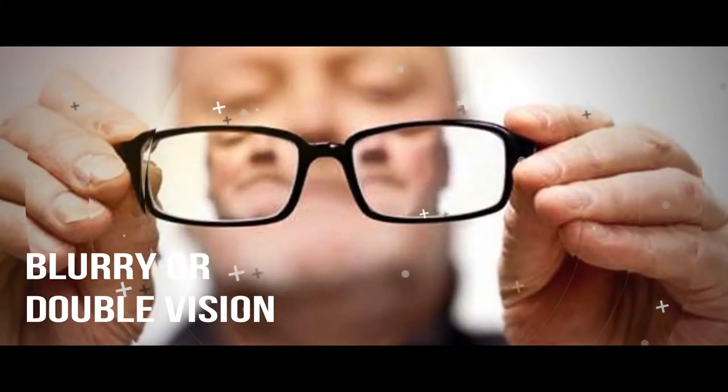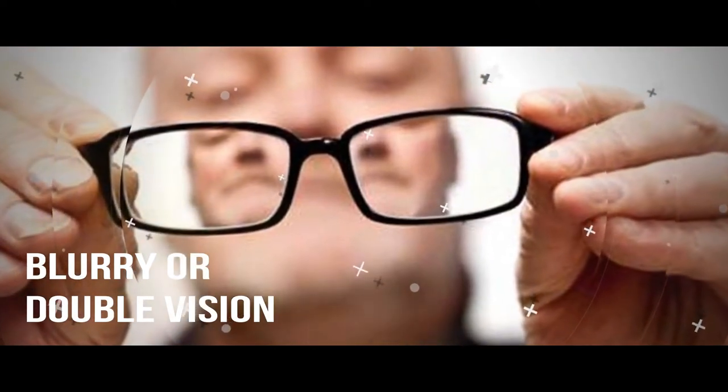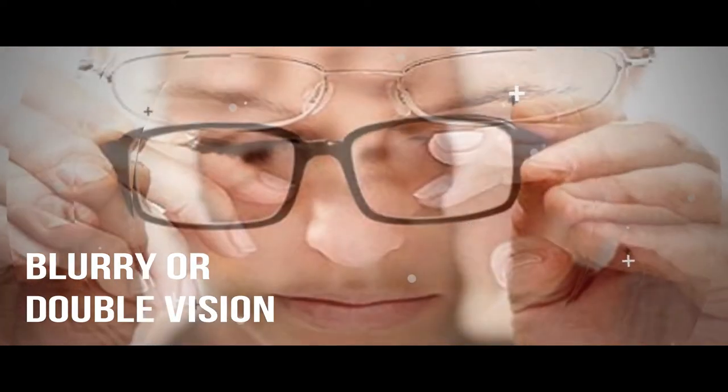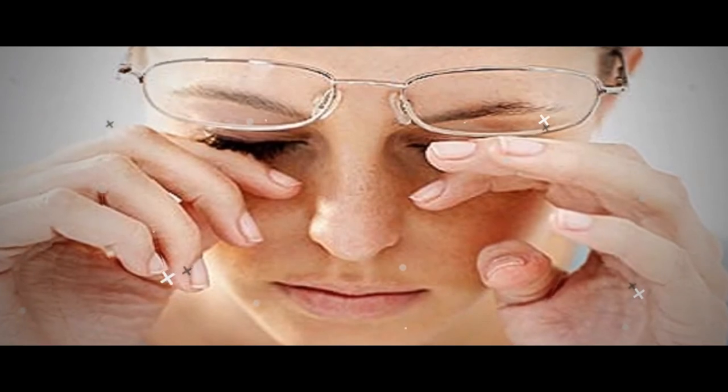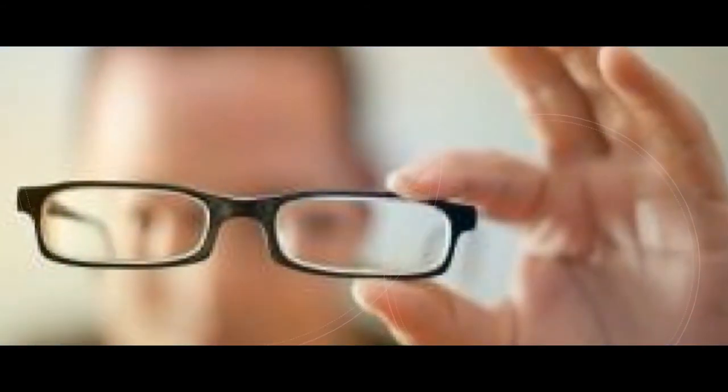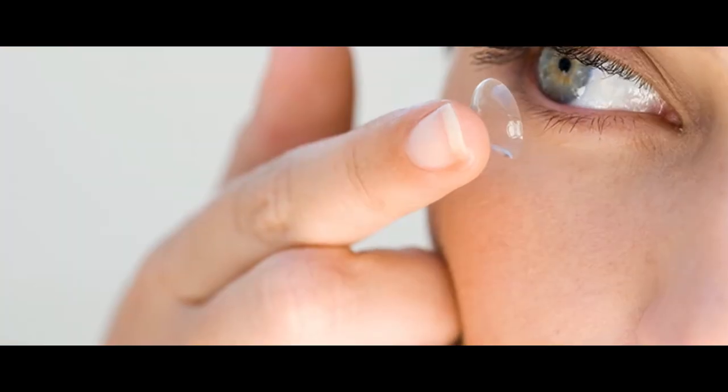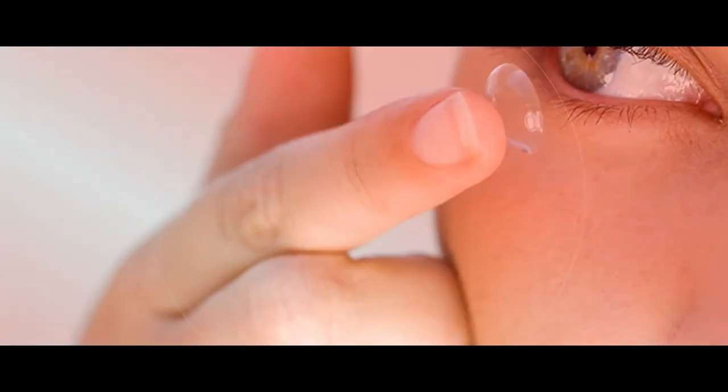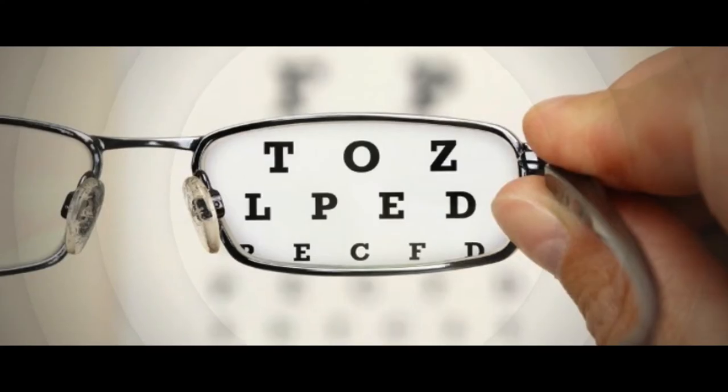Blurry or double vision: vision can also be affected when an aneurysm starts bleeding or bursts. As pressure builds on the brain stem, the pons, or the control center for the eyes, is impacted. This can lead to blurry or double vision and sensitivity to light. If you notice these vision symptoms come on after you get a bad headache and then maybe you get nausea, that means something is going on neurologically. Be on the lookout for escalating and combined symptoms.